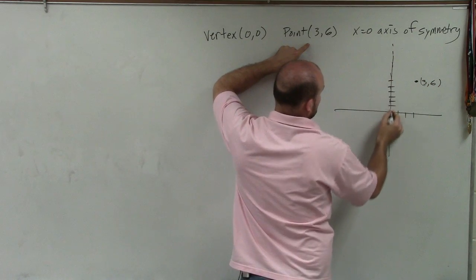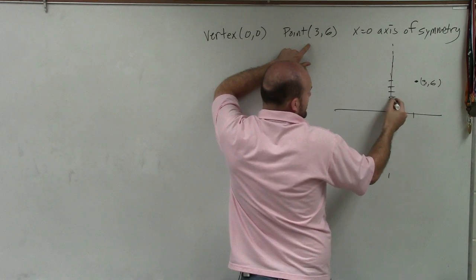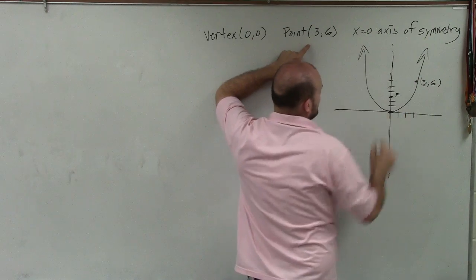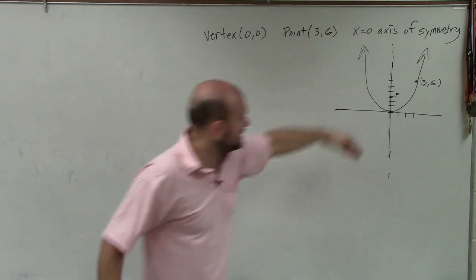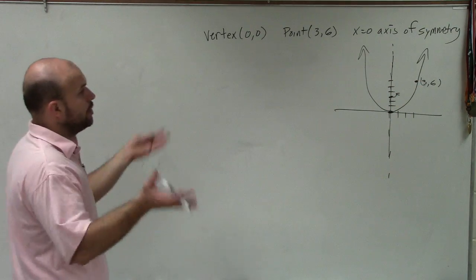And the axis of symmetry is at x equals 0. So I know the focus is going to be somewhere in there, and I know it's going to go through that point. So it has to open up like that, right? It can't open down because then it would never go through the point 3 comma 6.